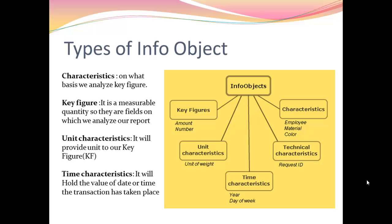Characteristics types of info objects are those on the basis of which we analyze key figures. A unit characteristic will provide unit to our key figures like kg or pound, and time characteristic will hold the value of time when the transaction has taken place. We are left with technical characteristic that is a request ID which we will be learning in practicals.